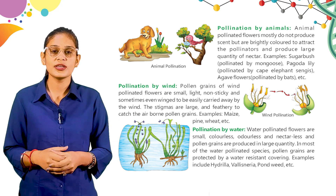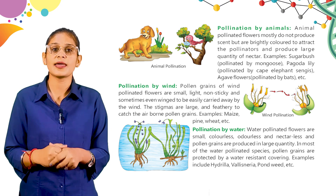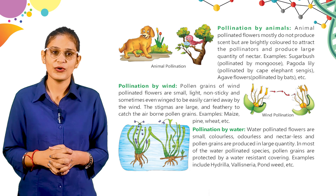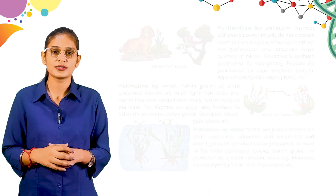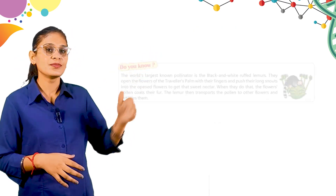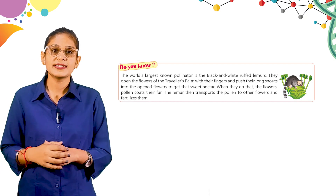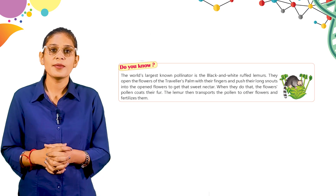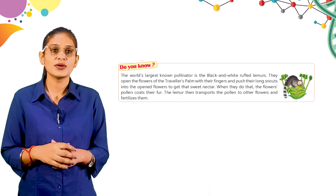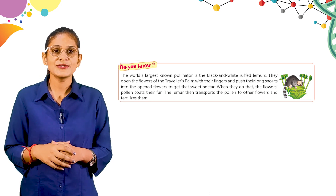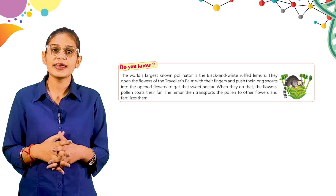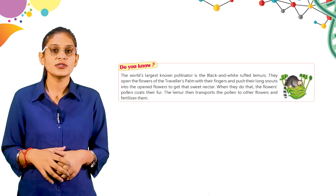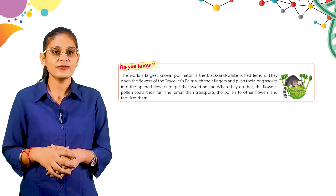So students, in water pollination the flowers are small, colorless, odorless, and nectarless. Look at this picture showing pollination by water. Do you know? The world's largest known pollinator is the black-and-white ruffed lemur. They open the flowers of the traveller's palm with their fingers and push their long snouts into the open flowers to get their sweet nectar. When they do that, the flower's pollen coats their fur. The lemur then transports the pollen to other flowers and fertilizes them.